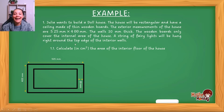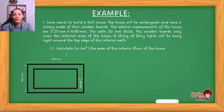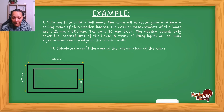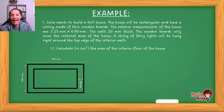A string of fairy lights will be hung right around the top edge of the interior walls. Take note — this is a bird's eye view; you're looking at the dollhouse from the top. The question asks: calculate, in centimeters squared, the area of the interior floor of the house. I want to emphasize — always read all the information given to you before you even read the question. Students who go to the question first tend to miss things. Read everything first, so when you read the question you know where to find the information you need.